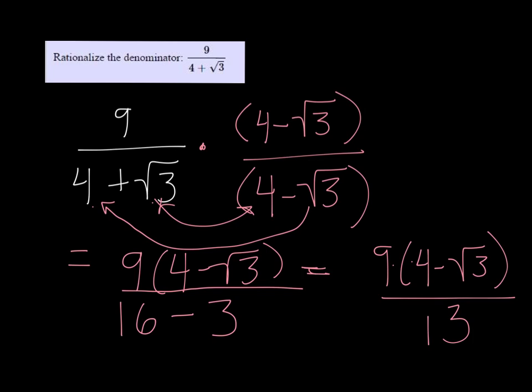Alright, if your instructor or the system wants you to go ahead and multiply that out then it would be 36 minus 9 root 3 over 13.